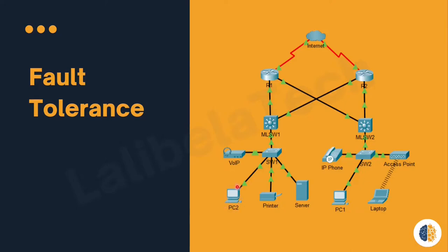If PC2 wants to send a message to PC1, it can use different routes. The first one is it can use from here to here. It can also use this second one, or the third one. It means that if one fails, there are other options to deliver the packet or the message from PC2 to PC1, and we call this type of network a fault-tolerant network.